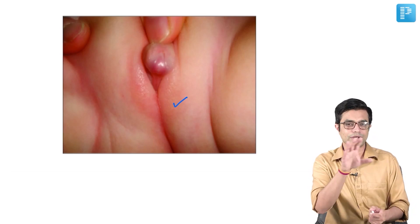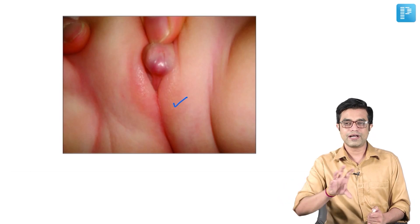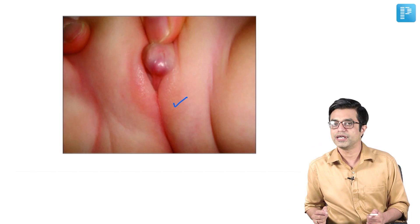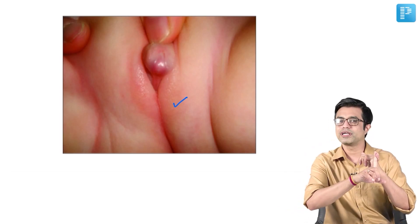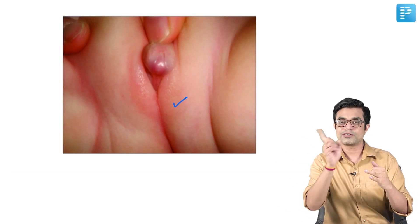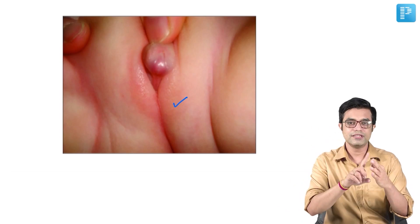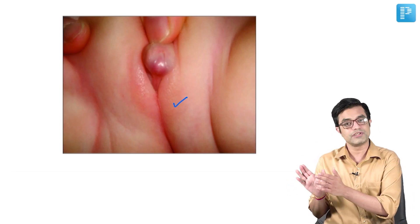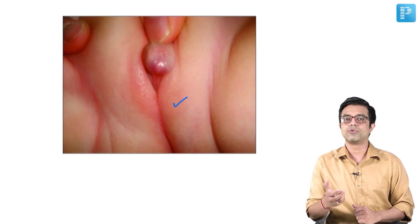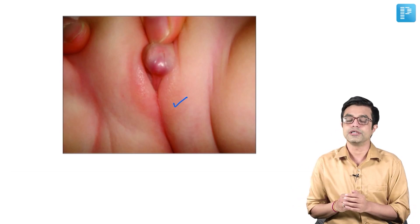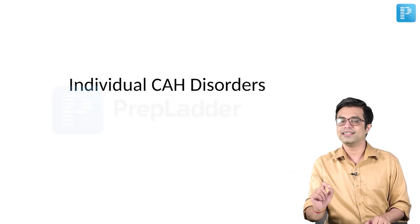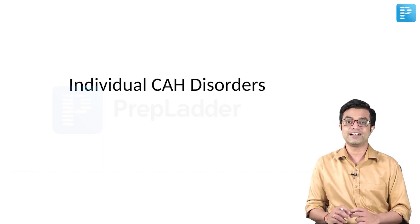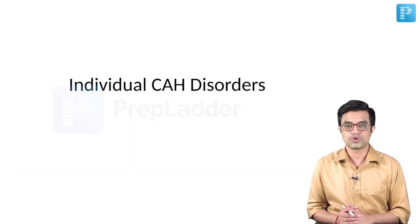So, if by looking at the genitalia you cannot assign gender, or if the gender is the reverse of what you expect from the genotype, it is called ambiguous genitalia. Three types of presentation to remember: hypoglycemia in all of them; mineralocorticoid excess or deficiency; and genitalia — normal or ambiguous. We will now discuss individual CAH disorders, beginning with 21-hydroxylase deficiency, the most common CAH, to which Nelson dedicates almost 8–9 pages.